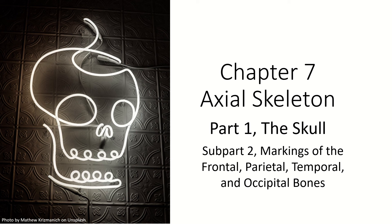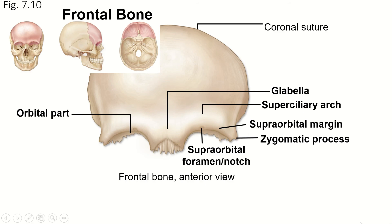In this section we're going to learn about what we call the markings on these big bones of the cranium. A marking is any distinct part of the bone that we call out and give a name. So it could be a part of the bone, it could be a hole in the bone, it could be a ridge on the bone. A marking is just a general term for a thing on the bone that we can give a name to and point out.